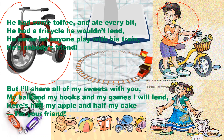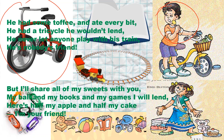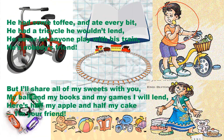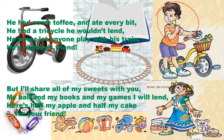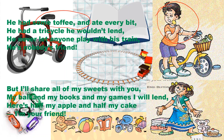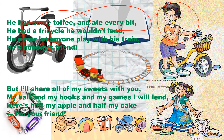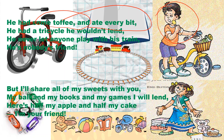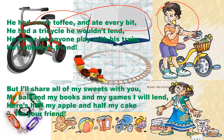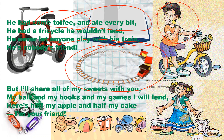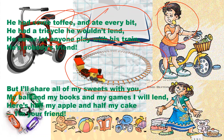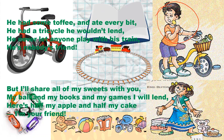He has a tricycle — this is a tricycle, okay? He has a tricycle and he doesn't lend it to any friend. He has some toffee and he doesn't share it. He never let anyone play with his train. He has a train but he doesn't let anyone play with it.